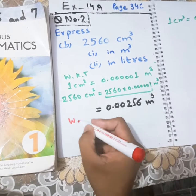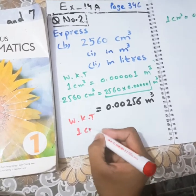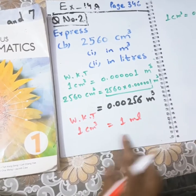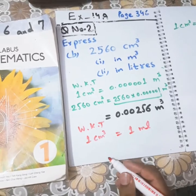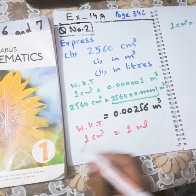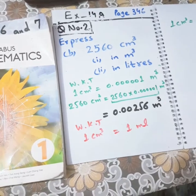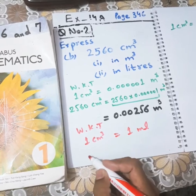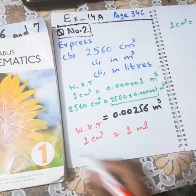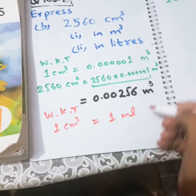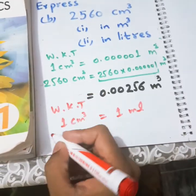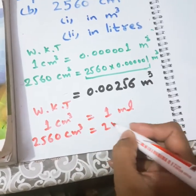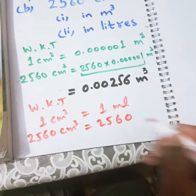Student, we know that 1 cm³ is equal to 1 mL. And here we have the 2560 cm³. So 2560 cm³ is equal to 2560 mL.